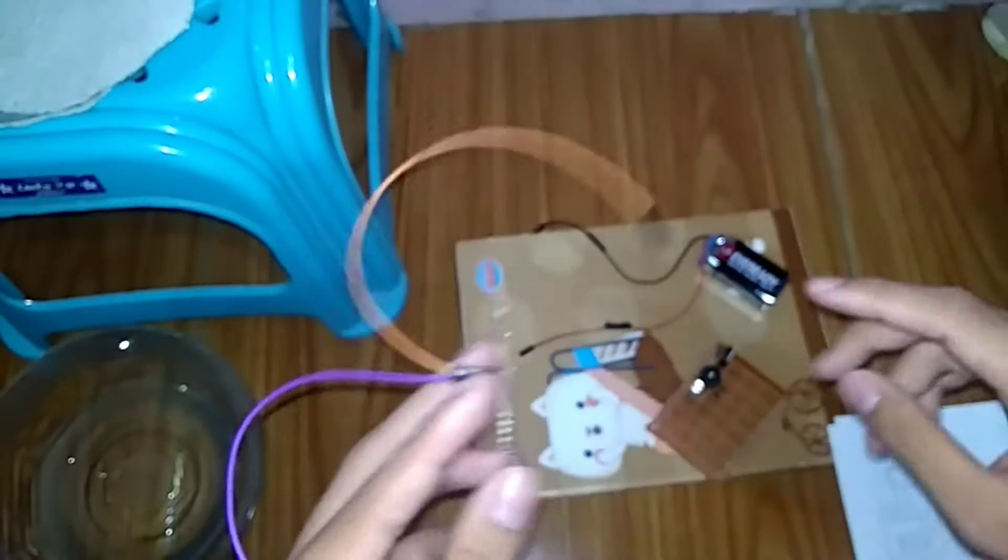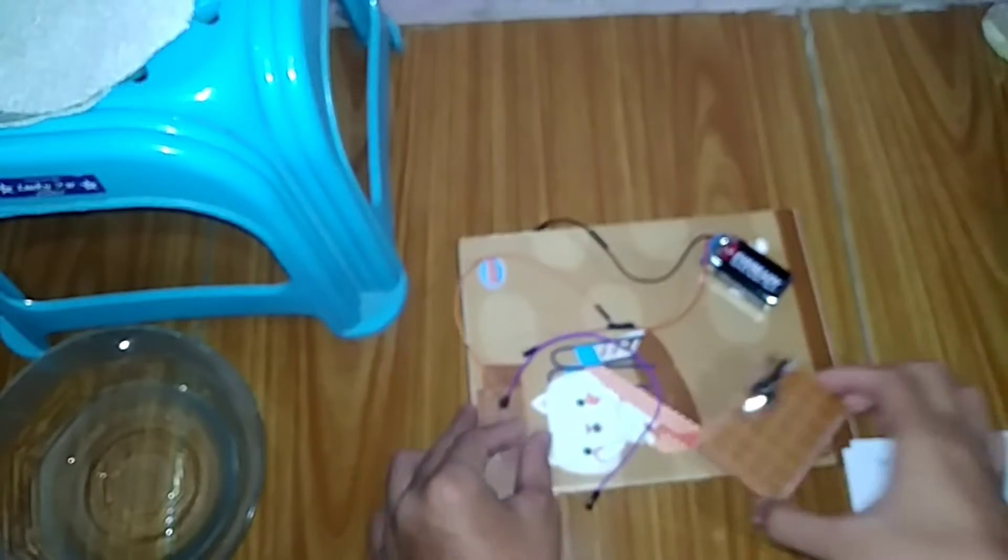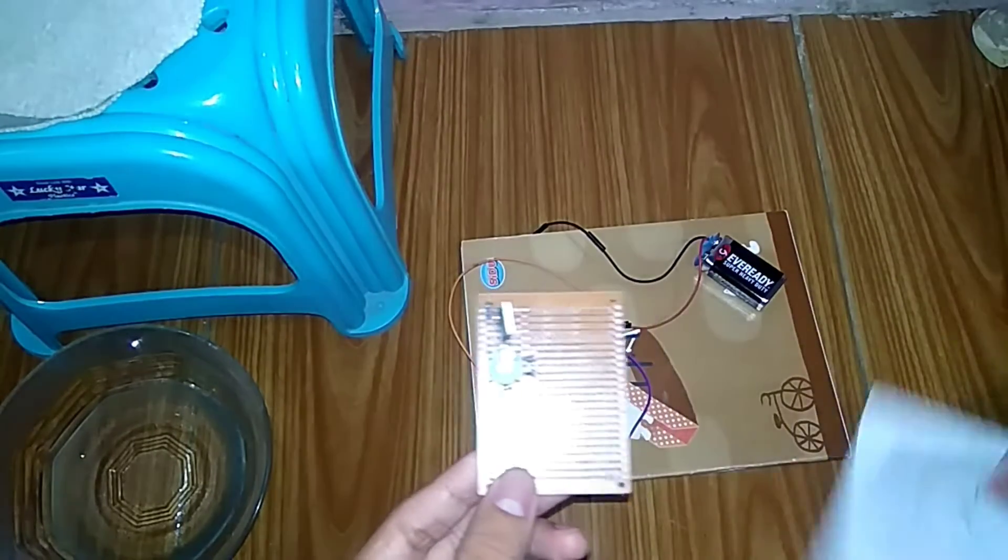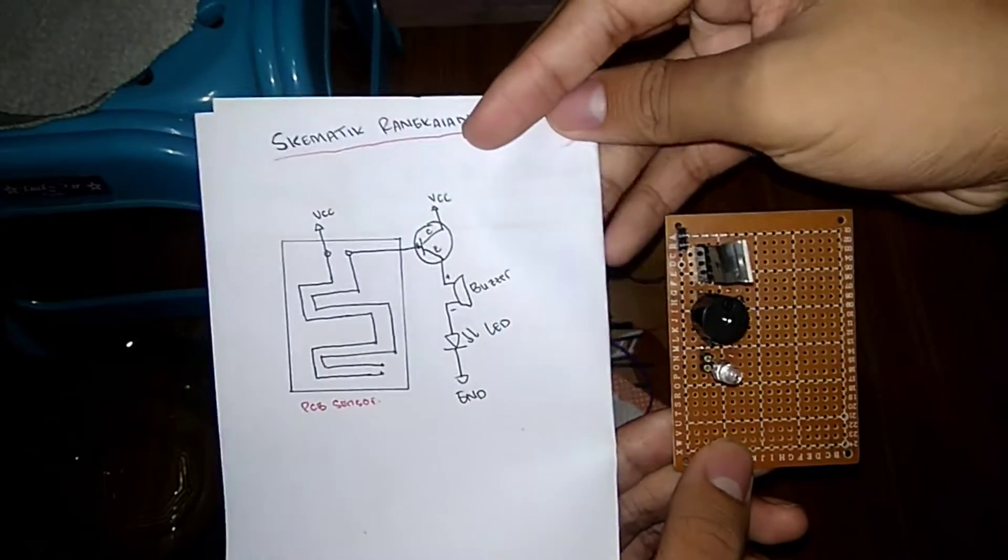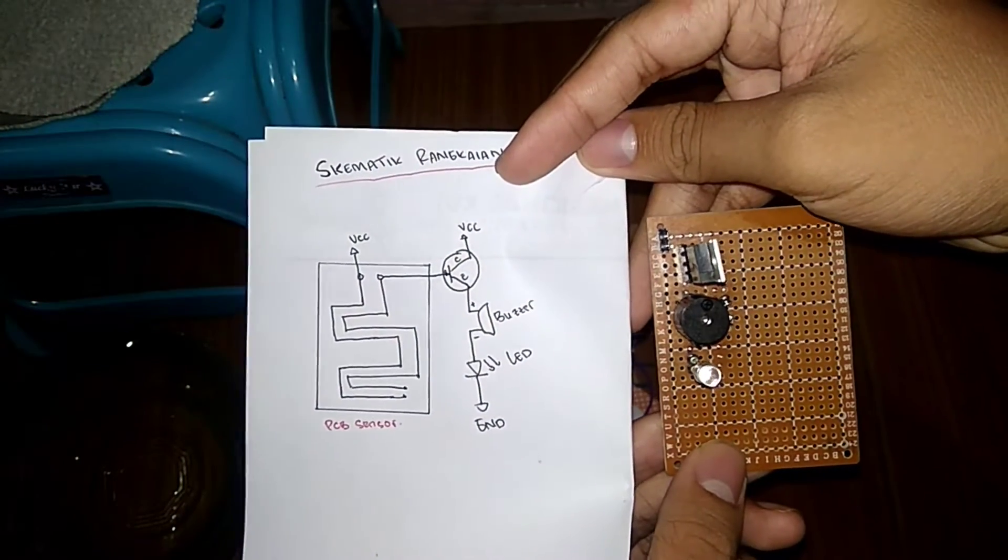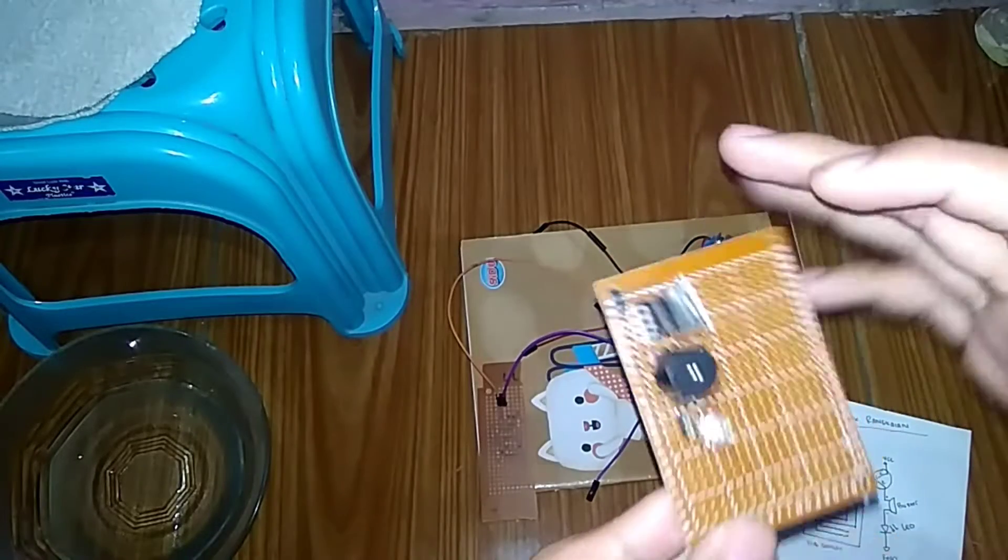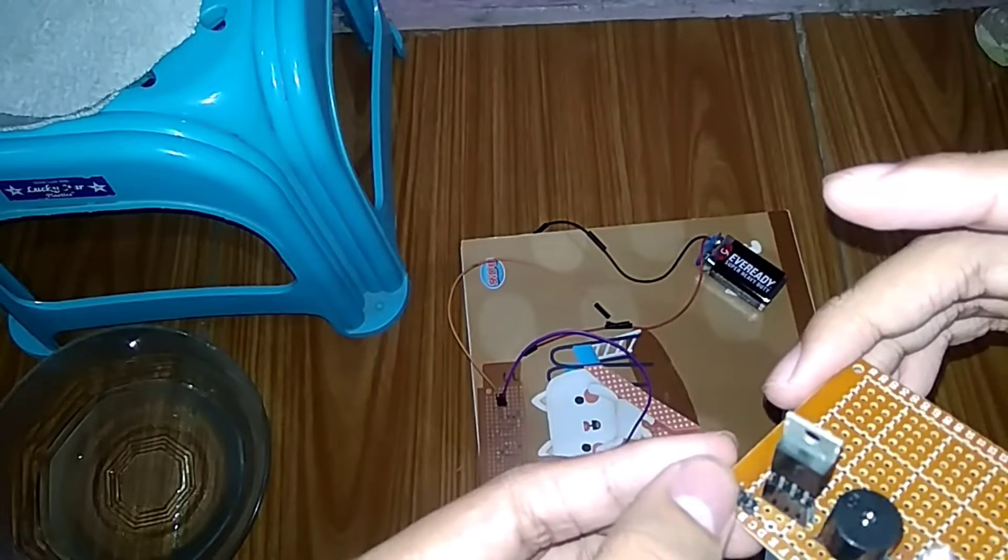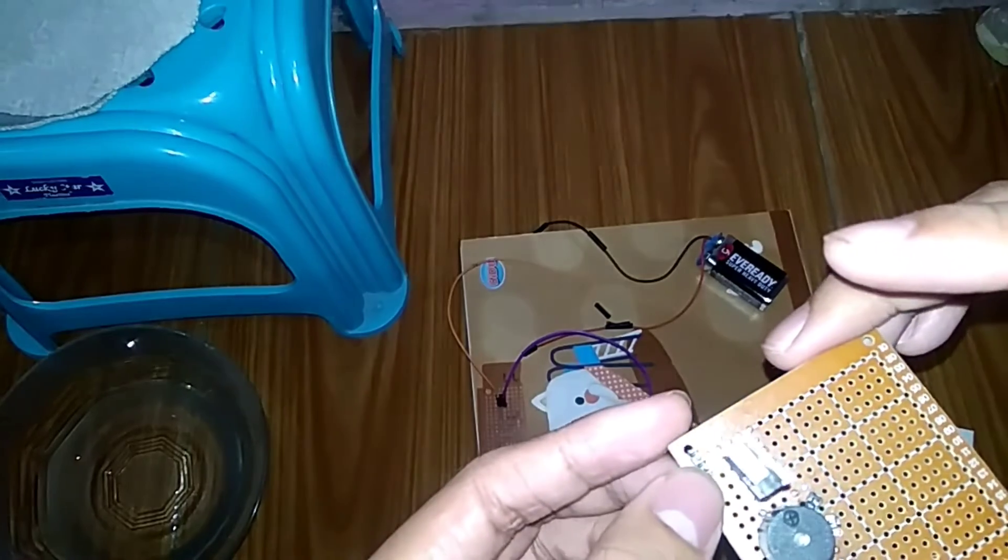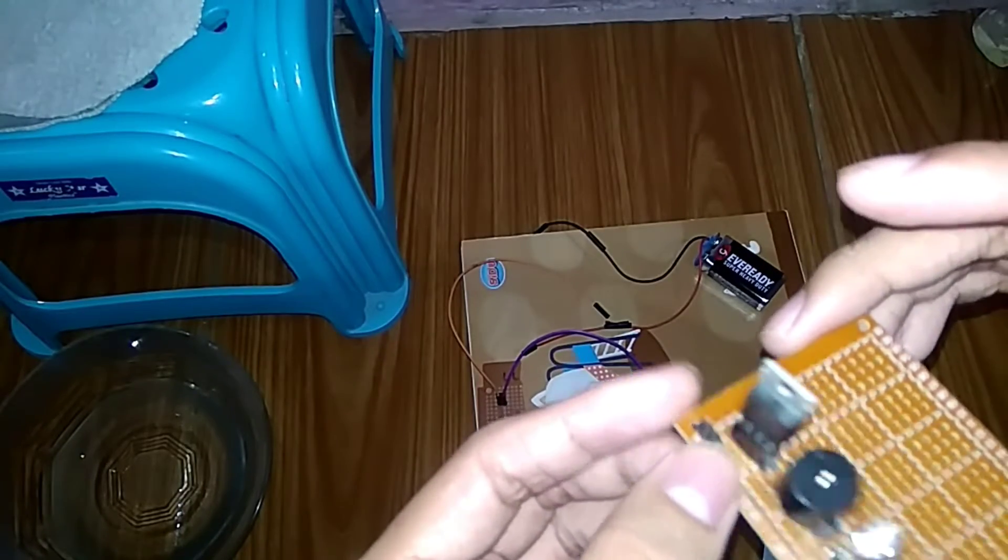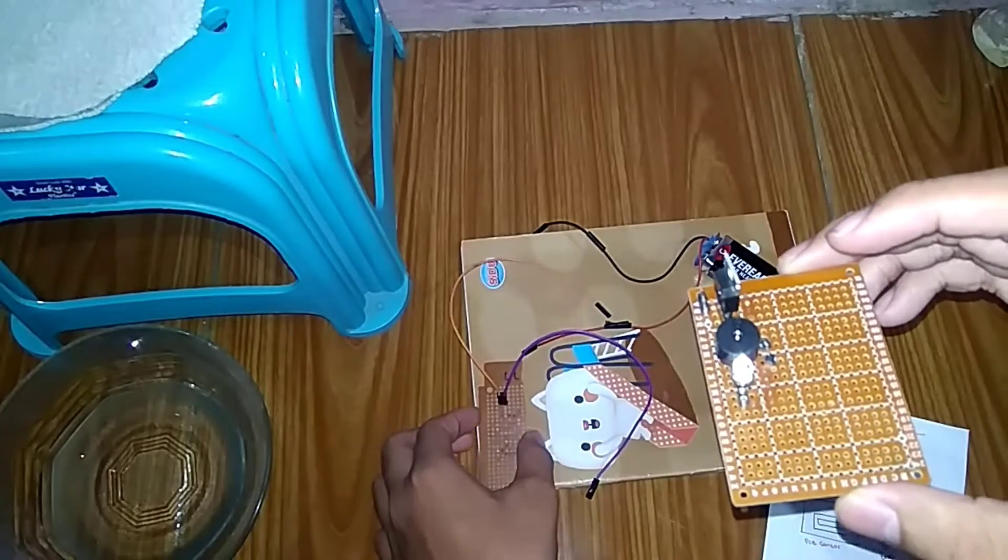Then this is the component circuit. The arrangement matches the schematic. Here is a transistor, a buzzer, and an LED.